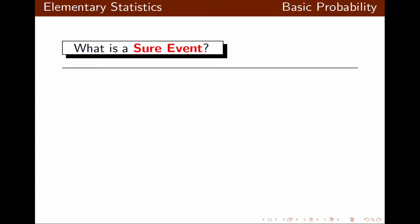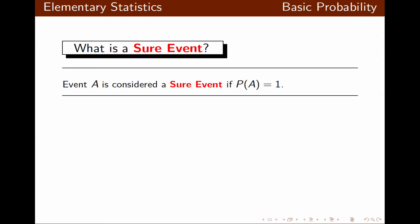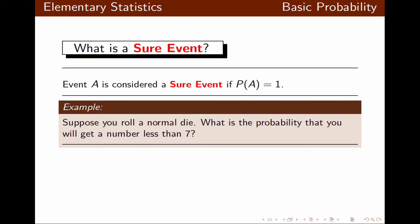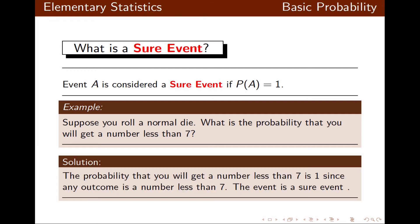Now let's look at more terminologies. Event A is considered a sure event if the probability of A is equal to 1, meaning it will definitely happen. For example, if we roll a normal die, what's the probability that we will get a number less than 7? Since a normal die is numbered from 1 to 6, any outcome will definitely be less than 7, so this is a sure event and the probability is 1.